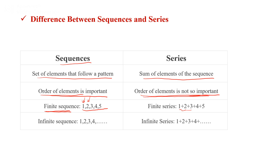A finite sequence is, for example, 1, 2, 3, 4, 5, and the corresponding finite series is 1 plus 2 plus 3 plus 4 plus 5. An infinite sequence is 1, 2, 3, 4, and so on, and an infinite series is 1 plus 2 plus 3 plus 4 plus 5 and so on.